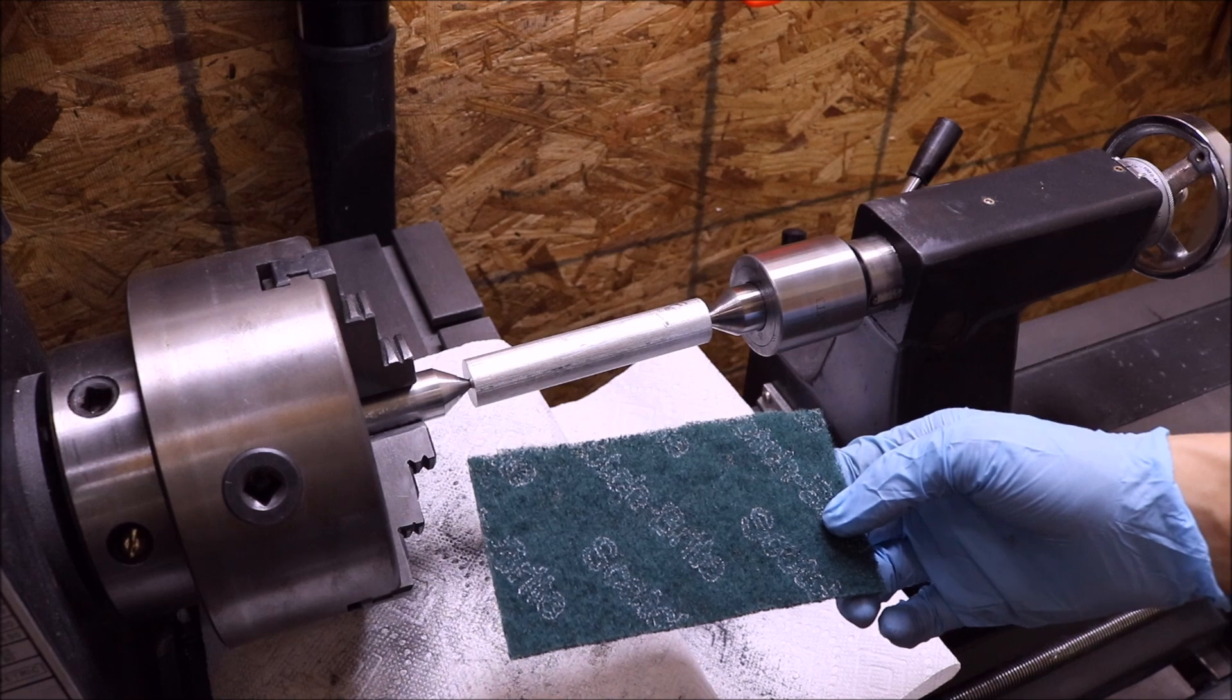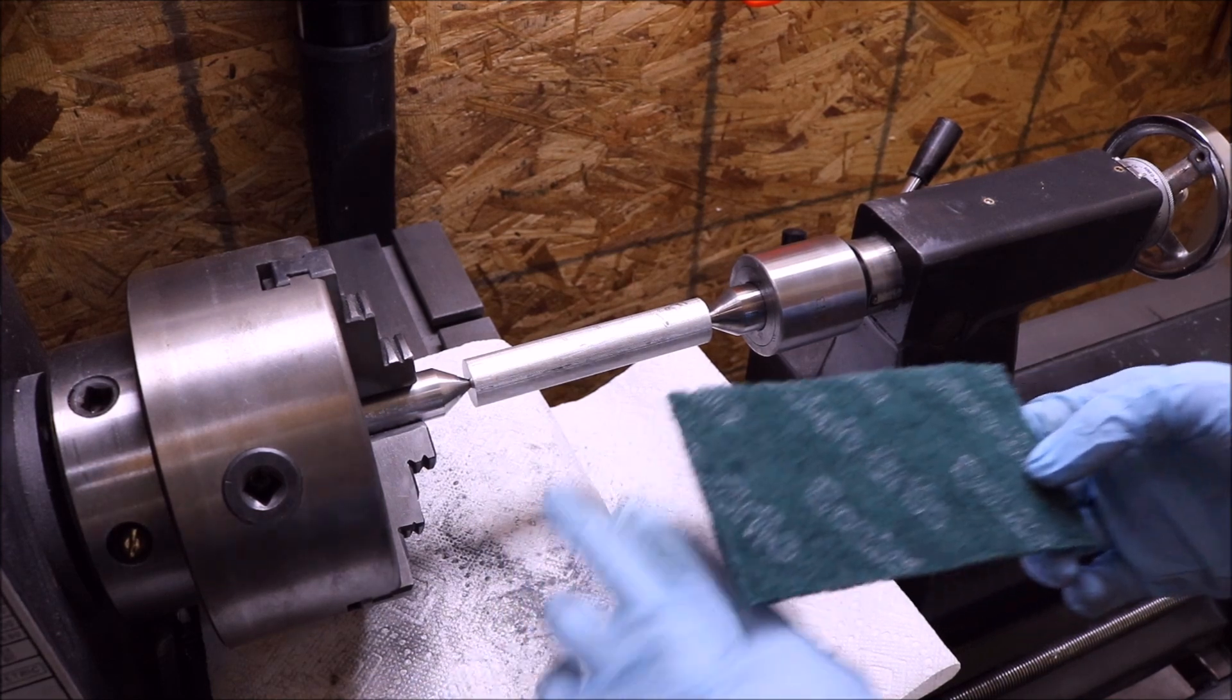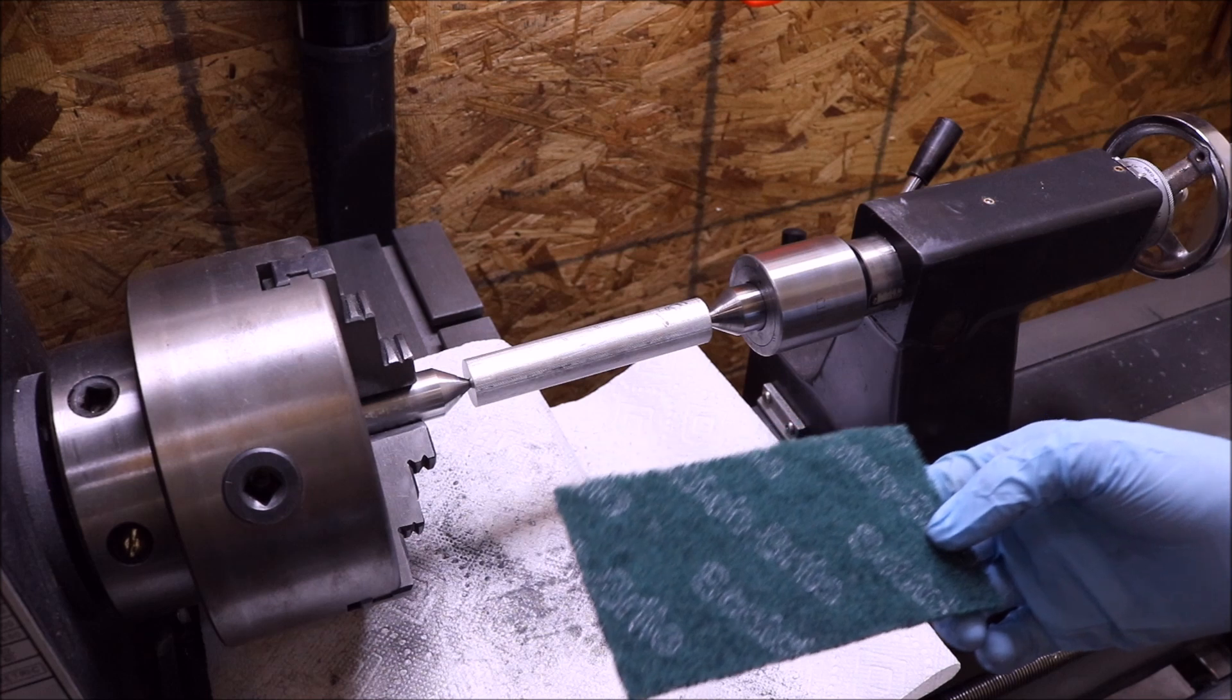I'll now take my green scotch-brite pad, and for this size of aluminum we're at 0.875.